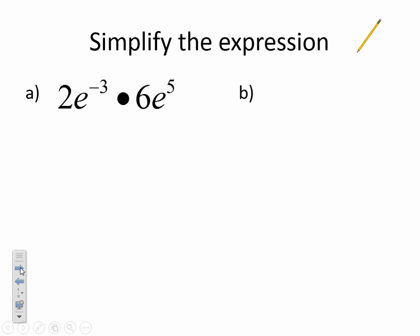This I do need you guys to write down, please. We are going to be simplifying the expression. Here we're going to use the same rules of exponents as we have been in the past. So when we do this, we're going to take 2 times 6, and we're going to get 12. And then we're going to take E to the third and E to the fifth. When I have exponents, I add them. So I'm going to get E to the second power, because I'm adding negative 3 plus 5.